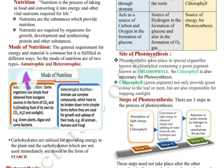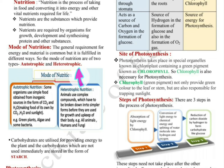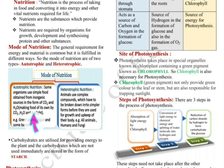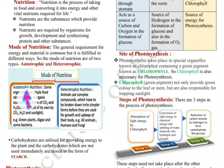Autotrophic means self, and trophic relates to food — so organisms that can make food themselves follow autotrophic nutrition. Some organisms use simple inorganic sources such as carbon dioxide and water, making food using carbon dioxide, water and sunlight — this is photosynthesis. Examples are green plants, algae, and bacteria like cyanobacteria, which contain chlorophyll — a green pigment — that allows them to photosynthesize and make their own food. This mode of nutrition is called autotrophic nutrition.